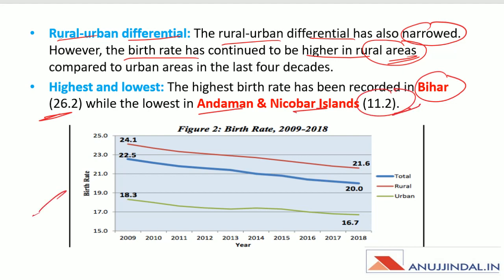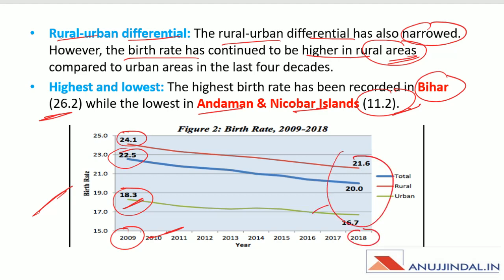This graph compares birth rates across urban, rural, and total categories. In 2009, the urban birth rate was 18.3, the total was 22.5, and the rural was 24.1. By 2018, these have decreased to 16.7, 20, and 21.6 respectively.